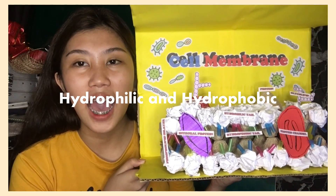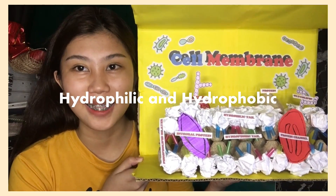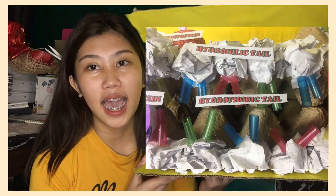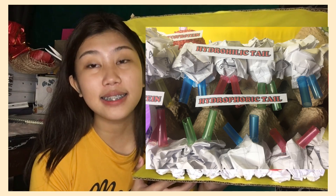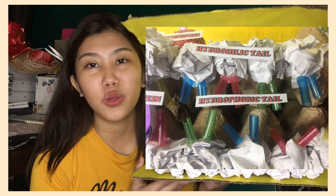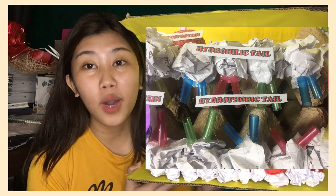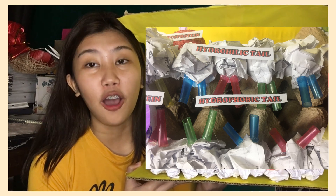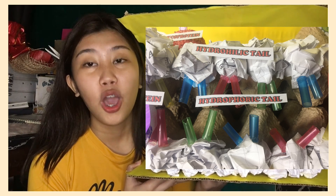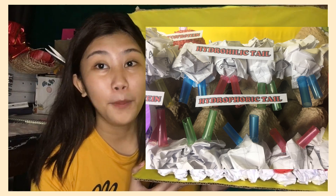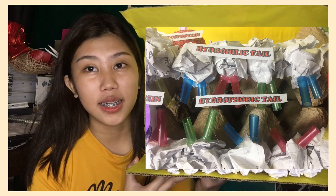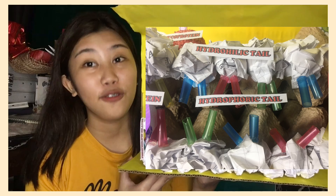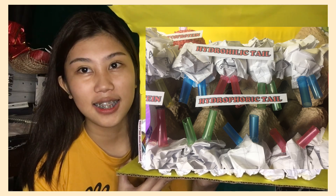The next one is the Hydrophilic Head and Hydrophobic Tail. The head loves water, which is hydrophilic, and the tails hate water, which is hydrophobic. The water-hating tails are on the interior of the membrane, whereas the water-loving heads point outward towards either the cytoplasm or the fluids surrounding the cell.